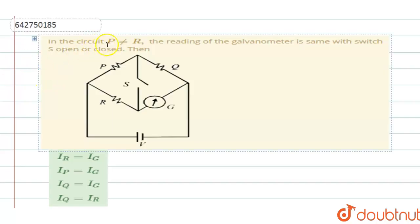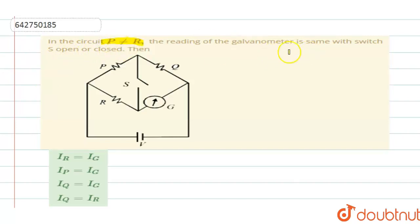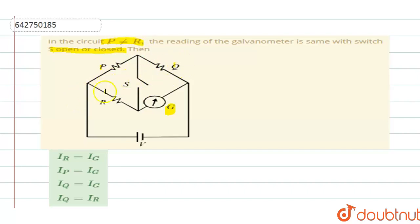In the circuit, P is not equal to R. The reading of the galvanometer is the same whether the switch is open or closed. So they are saying this is a circuit where P, Q, R are three resistors and here you have one galvanometer G connected at this point, and along with that a switch S is connected. The condition is P and Q are not equal. So if that is the situation, then what condition goes through? Which condition can be applied in this case that they are asking?